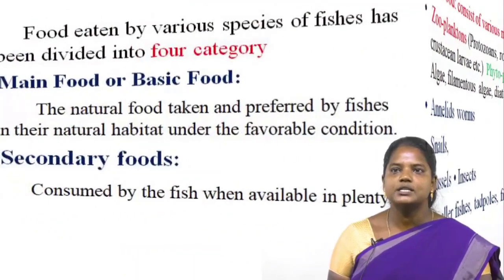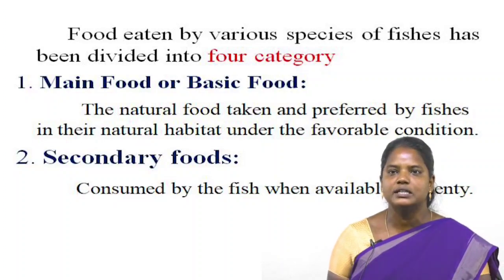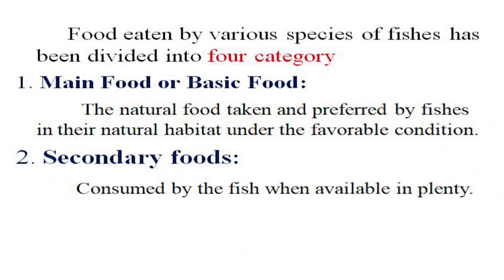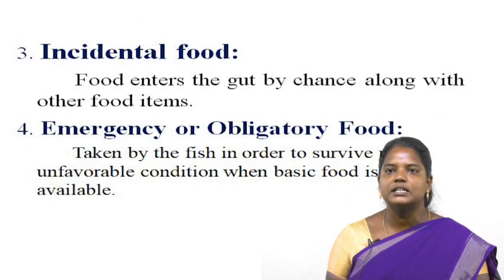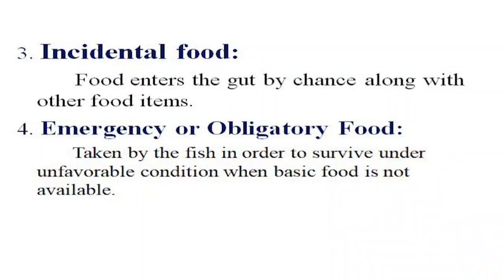Fishes have been divided into four categories based on food. First is main food or basic food — the natural food taken and preferred by fishes in their natural habitat under favourable conditions. Second is secondary foods — consumed by the fish when available in plenty. Third is incidental food — food that enters the gut by chance along with other food items. Another is emergency or obligatory food — taken by the fish in order to survive under unfavourable conditions when basic food is not available.